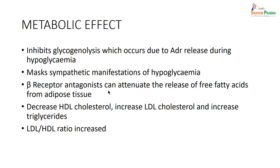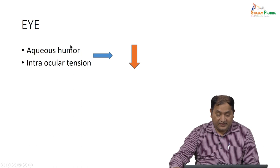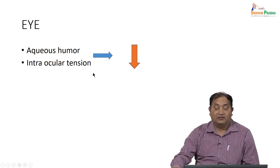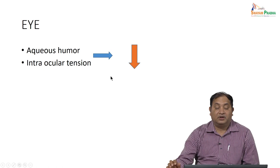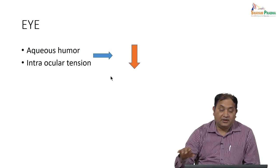Regarding effects on lipid profile: once you start beta blockers, there is an increased level of LDL and a decreased level of HDL. So it is important to monitor lipid profile once you start beta blockers. Regarding the effect on the eye: beta blockers are helpful because they cause decreased formation of aqueous humor, so they can be used in glaucoma, and this action is sustainable.